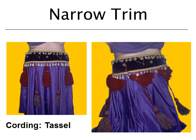Another type of narrow trim is cording braided into tassels. You see tassels in interior products like curtains or pillows, and sometimes in costume clothing. They're also commonly seen on purses and luggage.